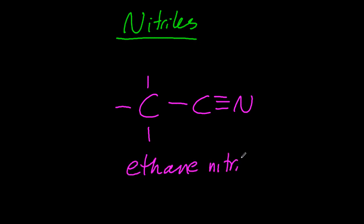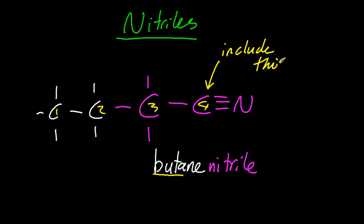And finally, the nitriles. So this is ethane nitrile. See the carbon-nitrogen triple bond. And if I added a couple more, you'd probably call that propane nitrile. But it's butane nitrile. Everyone gets that confused, except for me. Now don't forget to include the carbon in the nitrile group in the name. That's kind of new. Didn't used to be that way.